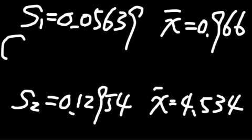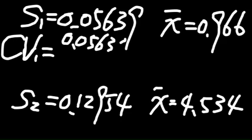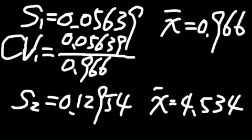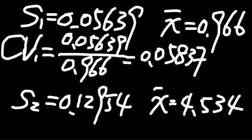And the first CV is 0.05639 divided by 0.966. So that will be 0.05837, around 6%.